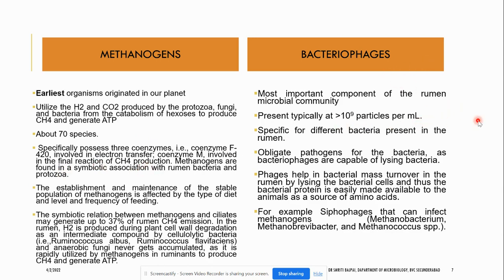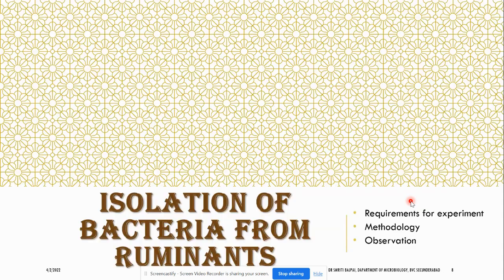Bacteriophages are also very important in the microbial community. Their number is estimated at 10^9 particles per ml and they are specific for specific bacteria. They help in bacterial mass turnover in the rumen by lysing bacterial cells, making bacterial protein easily available to animals as a source of amino acids. An example is the siphonovirus phage.